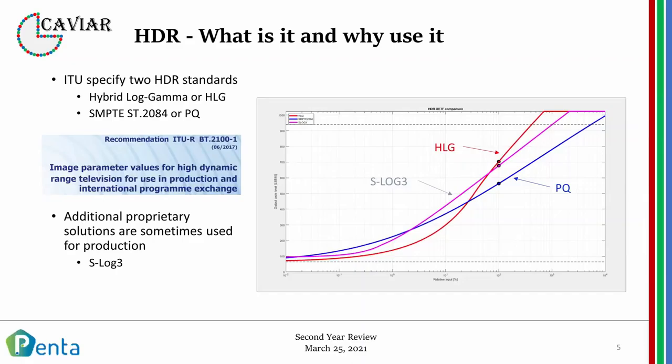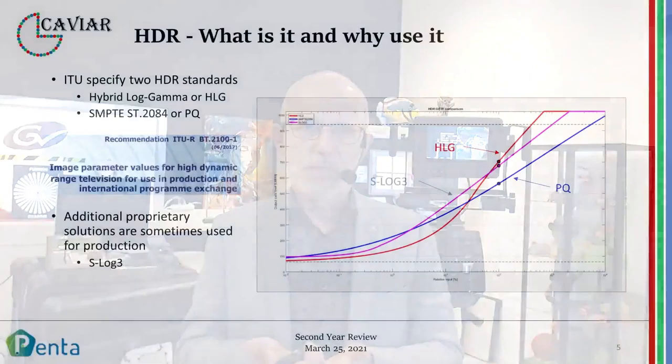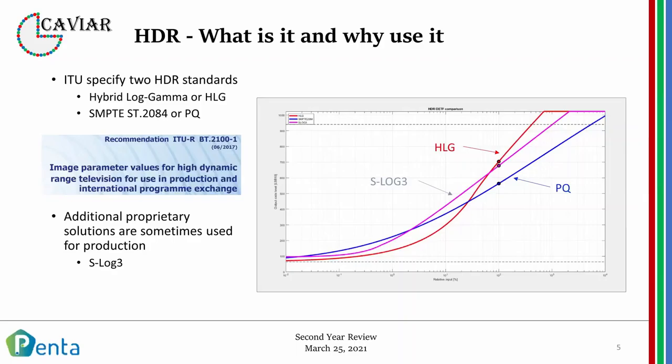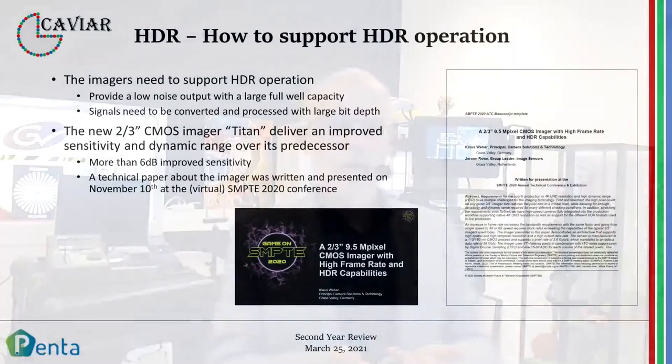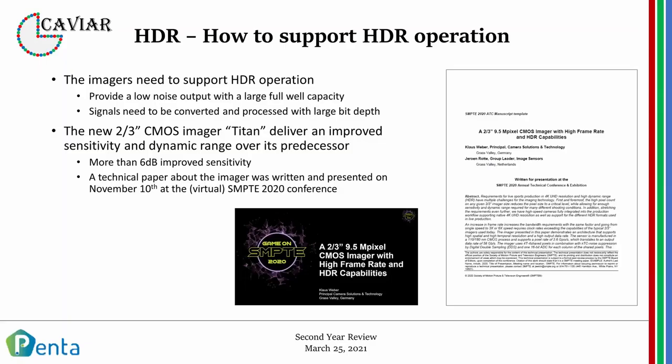Unfortunately, there is not just one HDR standard — there are multiple different standards. The International Telecommunication Union, the ITU, has specified two different HDR standards for production and delivery. One is HLG or hybrid log gamma, and the other is PQ, also known as ST 2084. Unfortunately, there are even more standards sometimes used for production; Slog3 is one solution sometimes used for live productions. This means any converter solution needs to be able to handle multiple different HDR formats.